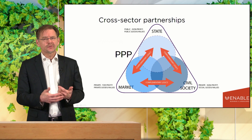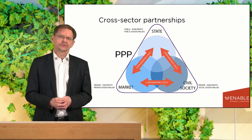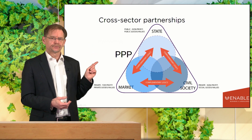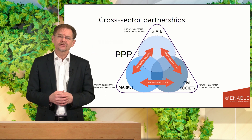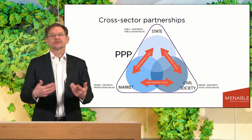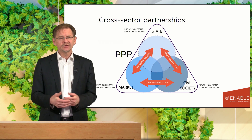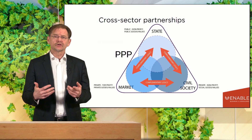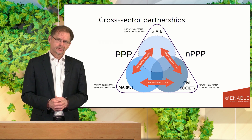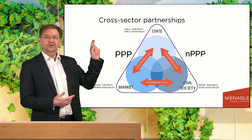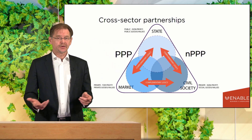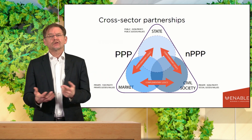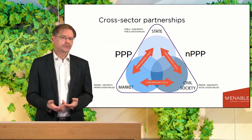The most common type of partnership occurs when a government partners with private firms. This type of partnership is called a PPP — a public-private partnership. PPPs are the classic form of partnerships and are often created to build large infrastructure projects. When the state partners with a civil society organization, we call this an NPPP — a non-profit public-private partnership. This type of partnership is often aimed at health or education projects.